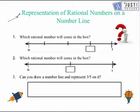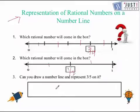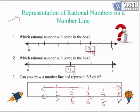Now we'll try some practice questions. You can pause the video to attempt them. In the first question, the number line is divided into four equal parts, so the marked point is three over four. In the second, the number line is divided into two equal parts, so it is one over two. In the third, we represent three over five — we divide the number line into five equal parts between zero and one, giving one over five, two over five, three over five, four over five, and five over five. So three over five is marked at the third division.